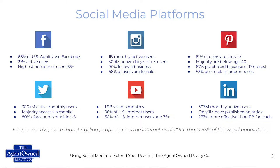There are a lot of social media platforms launching daily, but we're going to focus on six major players. With Facebook, as of 2019, about 68% of U.S. adults say they use it. Facebook is really your major market player in terms of reaching folks. Right now there are 2 billion-plus active users — meaning people who've logged in within the past 30 days. It has the highest number of users age 65-plus, which is something to keep in mind in terms of who you might be marketing to.